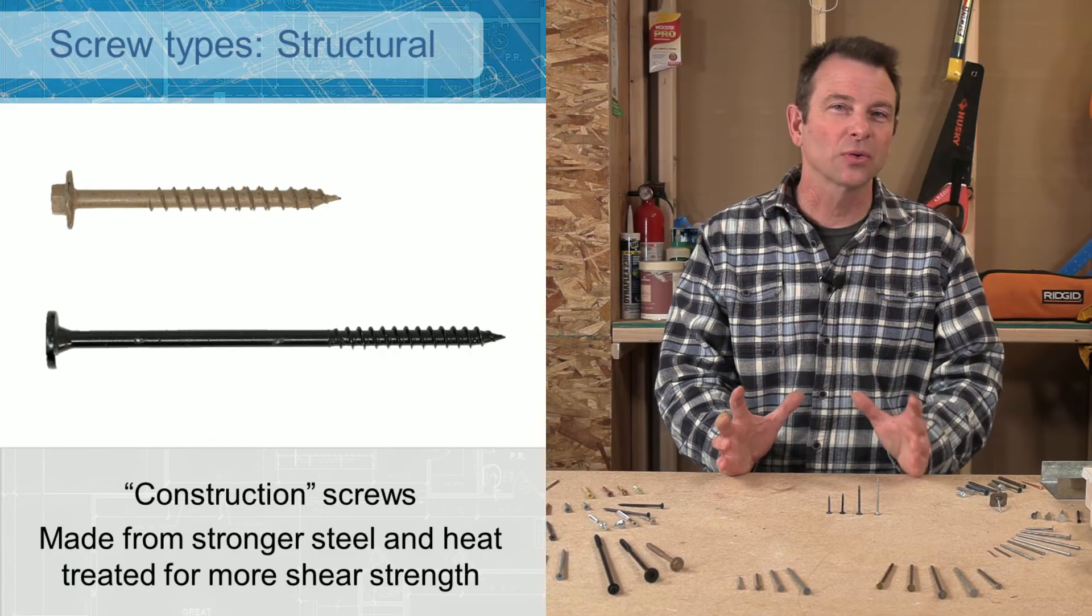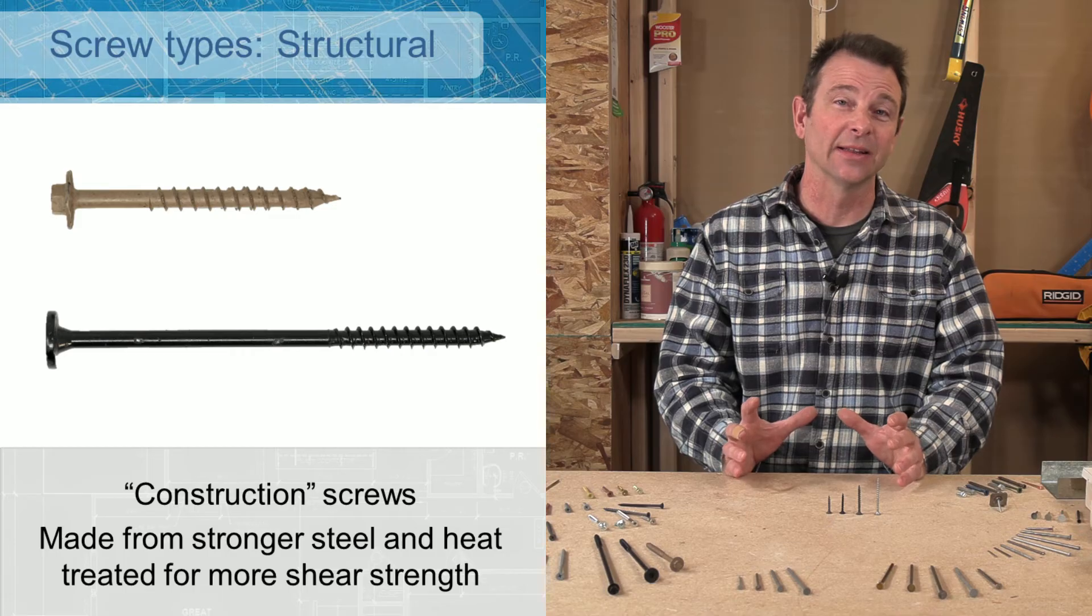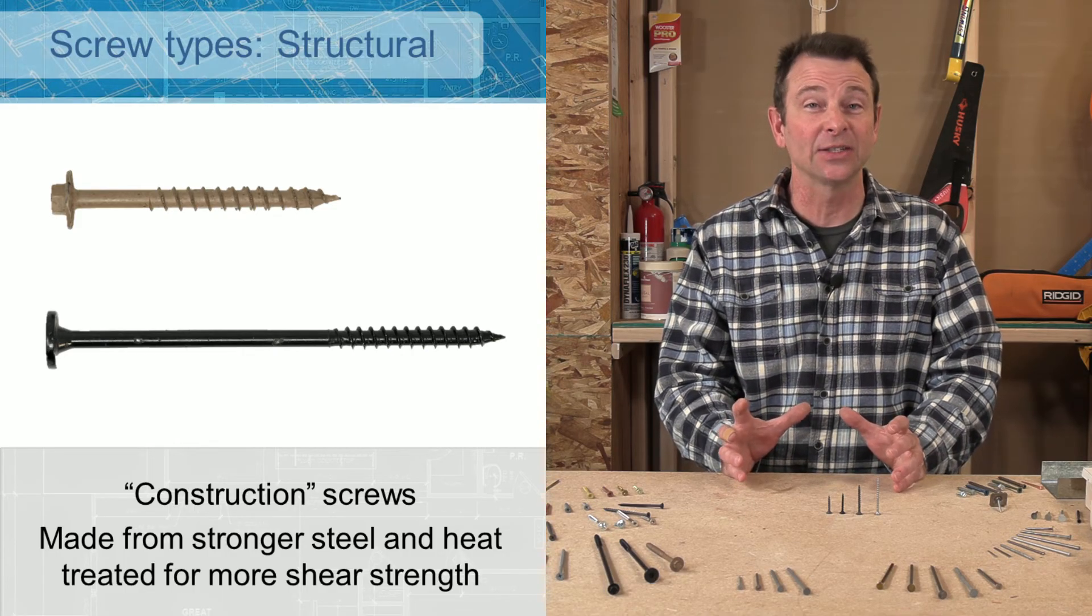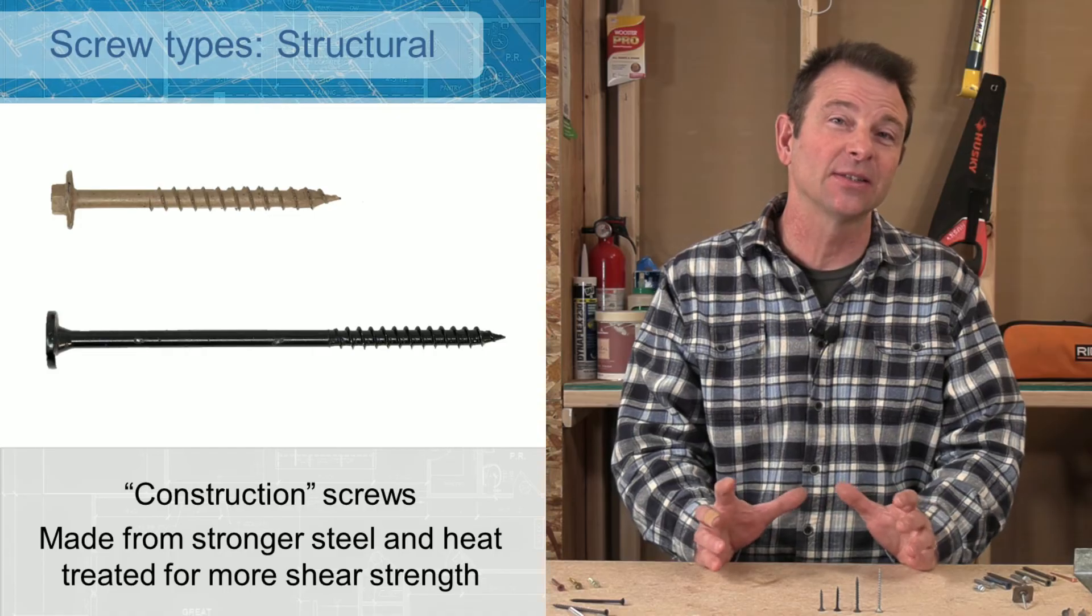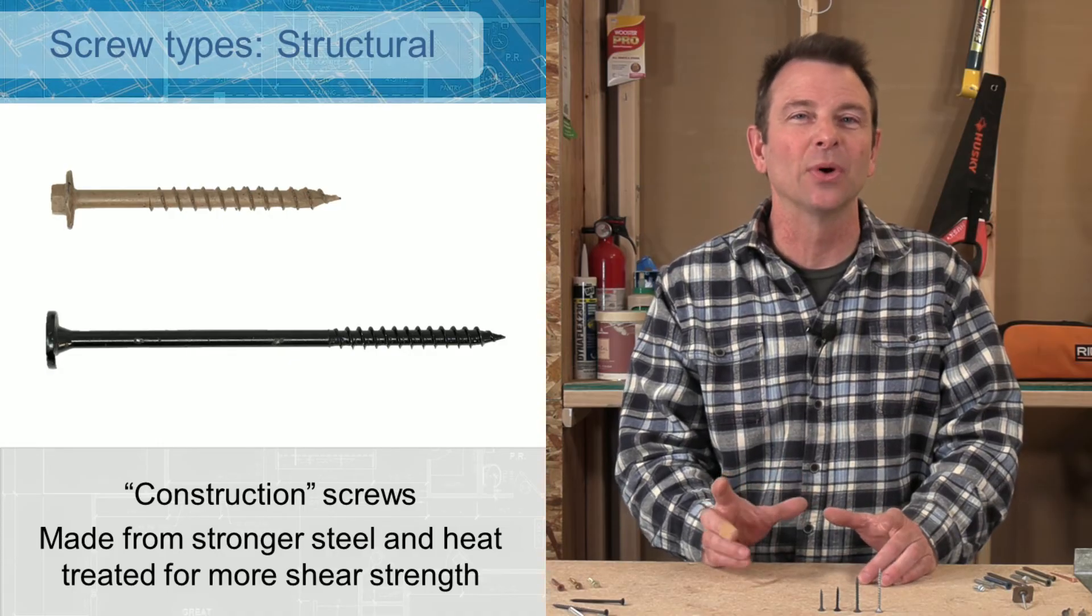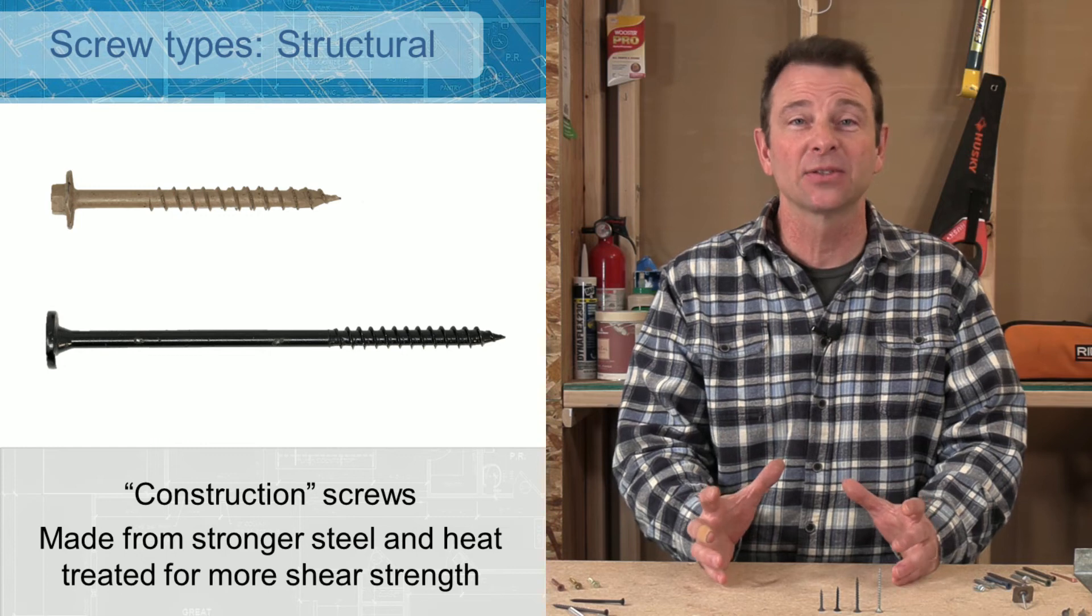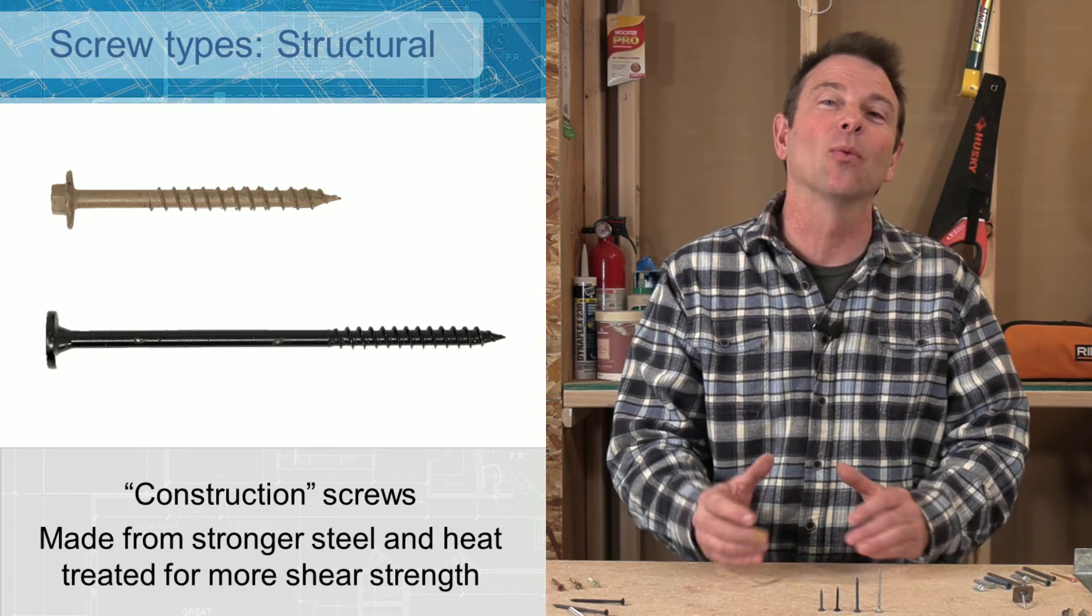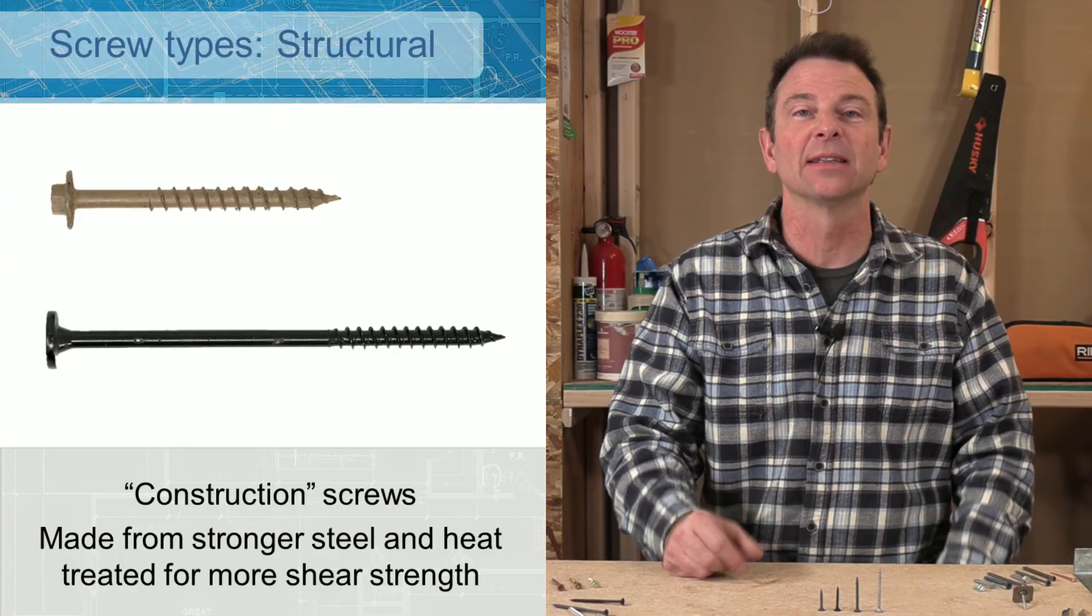There is a whole category of what we call structural screws. These screws rival nails in their strength. They're made with a better quality steel and they're heat treated to add to that strength. They'll have variations on their heads, their drive types, and different points and lengths and shank diameters on them. Bottom line, these screws are used for structural situations like framing where there's a lot of weight and stress on them. They are much less likely to break.